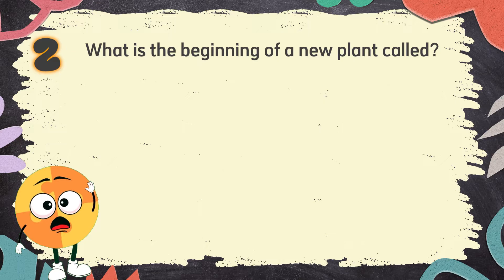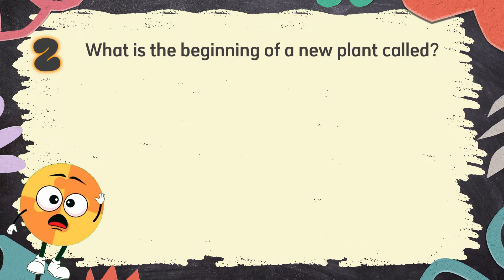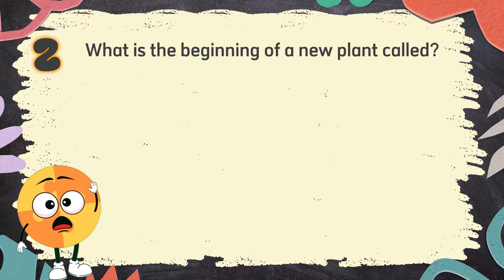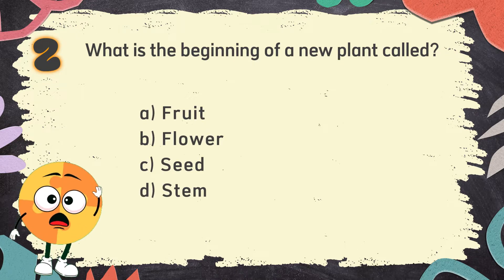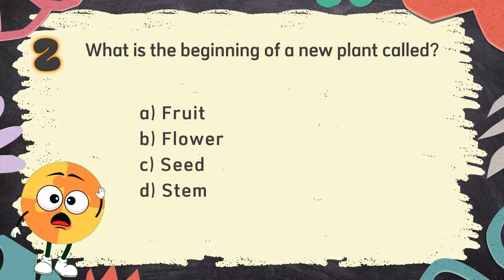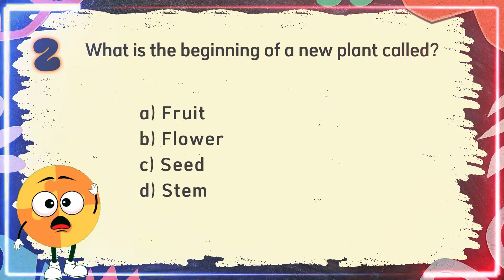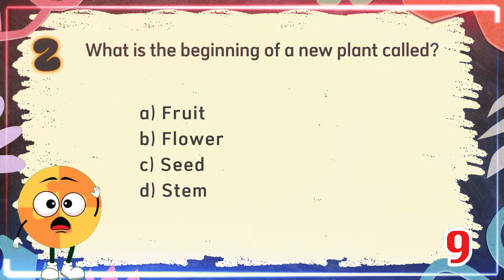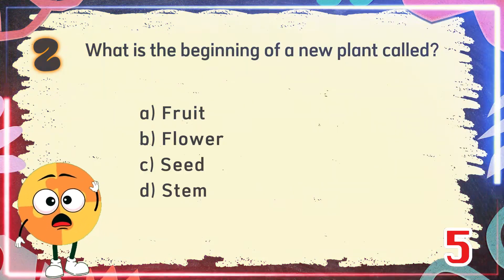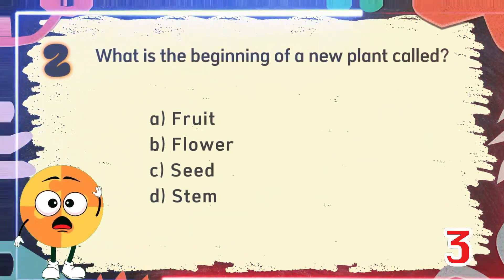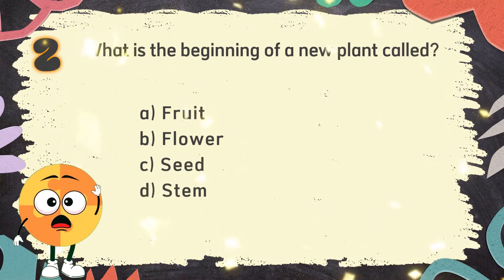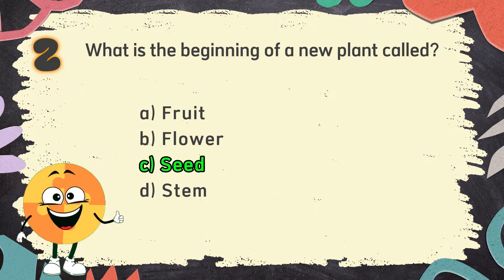Number 2: What is the beginning of a new plant called? The choices are: A. Fruit, B. Flower, C. Seed, D. Stem. The correct answer is C. Seed.